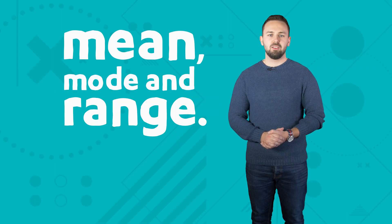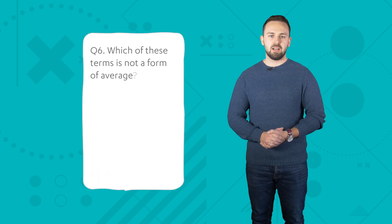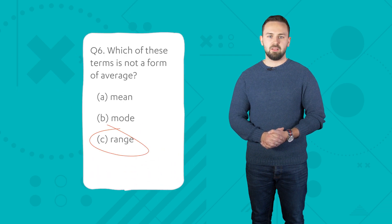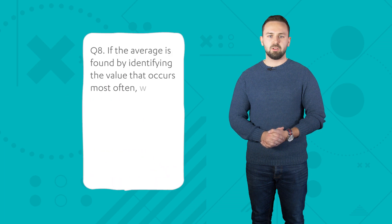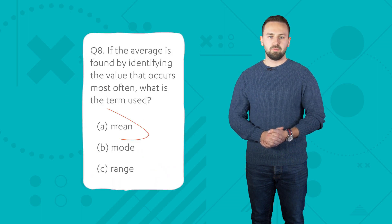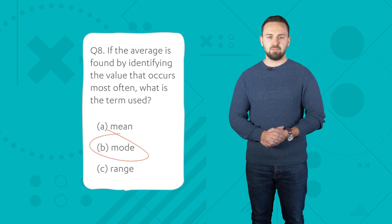Error five: mean, mode and range. Students think that range is a measure of average, not recognising that it's actually a measure of spread instead. This could be because it's often seen in the same lessons or context as mean and mode. Other problems included students mixing up mode and mean. Although both are measures of average, the question will ask for a specific one.